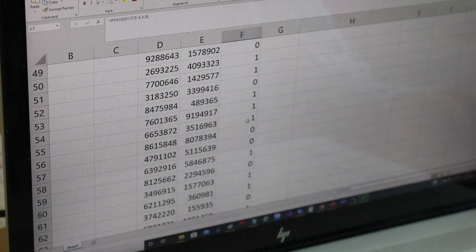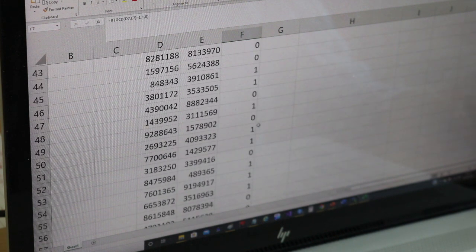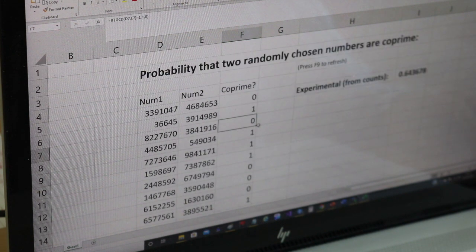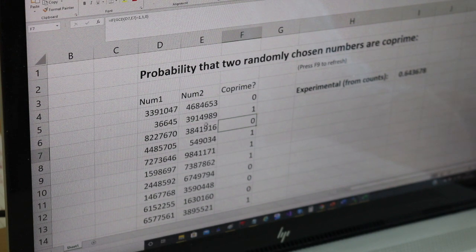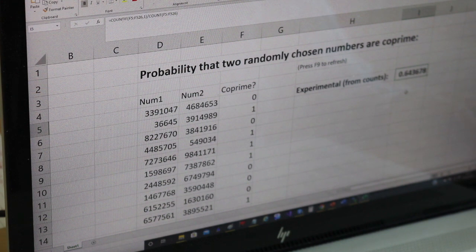And then what I've done is I've done this a number of times, thousands of times, and then I've counted the proportion of time in which the two numbers are coprime, and it happens in this case 64% of the time in my simulation.